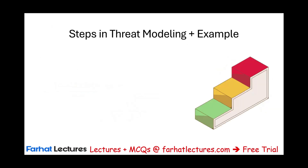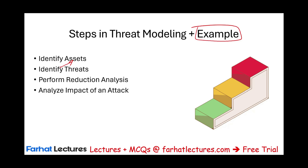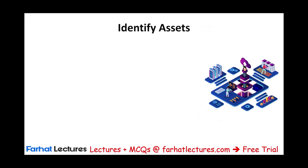The best way to illustrate threat modeling from a practical perspective is to look at the steps using an example. The steps in threat modeling involve: identifying assets, identifying threats that affect those assets, performing reduction analysis, analyzing the impact of an attack, developing countermeasures and controls, and finally reviewing and evaluating all steps. We'll use a company called SafeBank — a banking company — to walk through these steps.